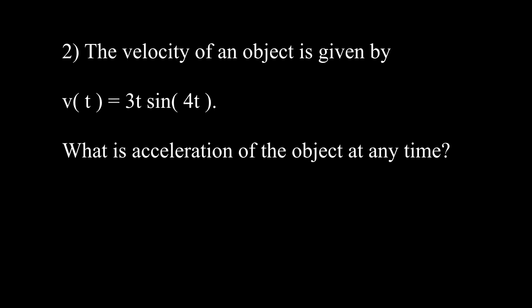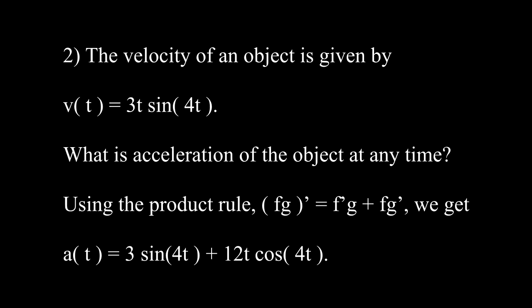Question 2. The velocity of an object is given by v(t) equals 3t times the sine of 4t. What is the acceleration of the object at any time? Using the product rule, we get a(t) equals 3 times sine of 4t plus 12t times cosine of 4t.